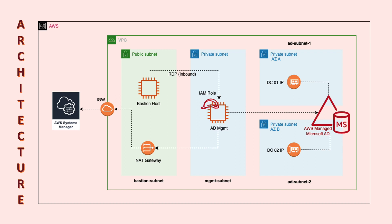When you select and launch this directory type, it creates a highly available pair of domain controllers powered by Windows Server 2019, connected by elastic network interfaces or ENIs that are created in the VPC of your choice. Since it's a managed AWS service, host monitoring and recovery, data replication, snapshots, and software updates are automatically configured and managed for you by AWS.